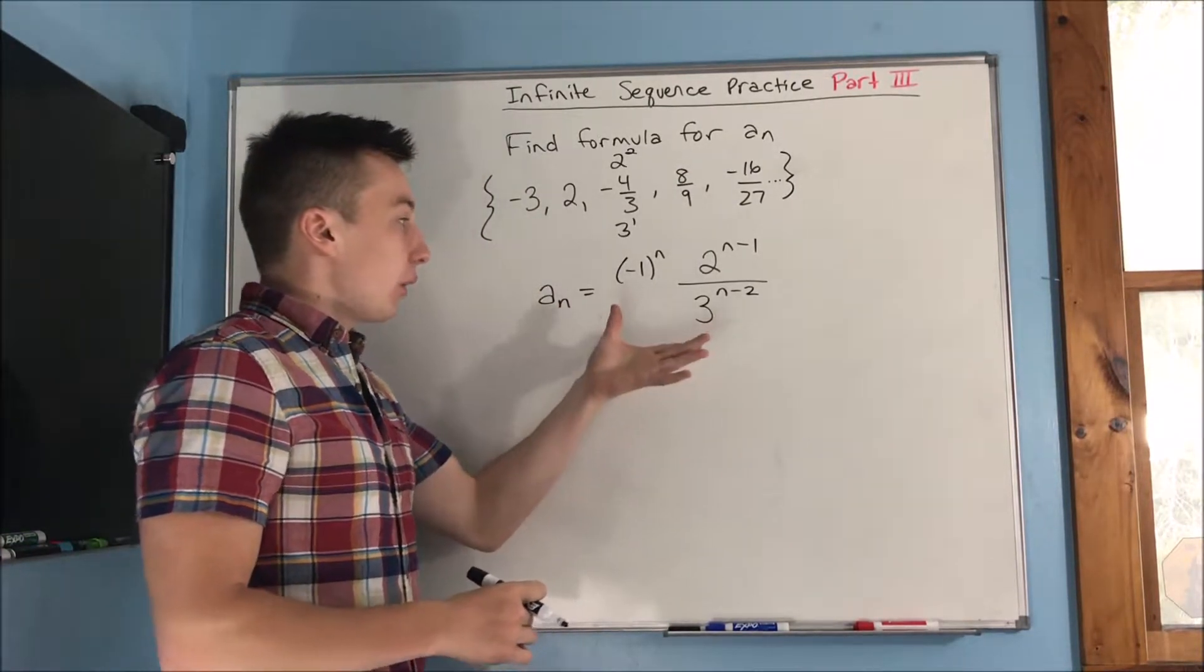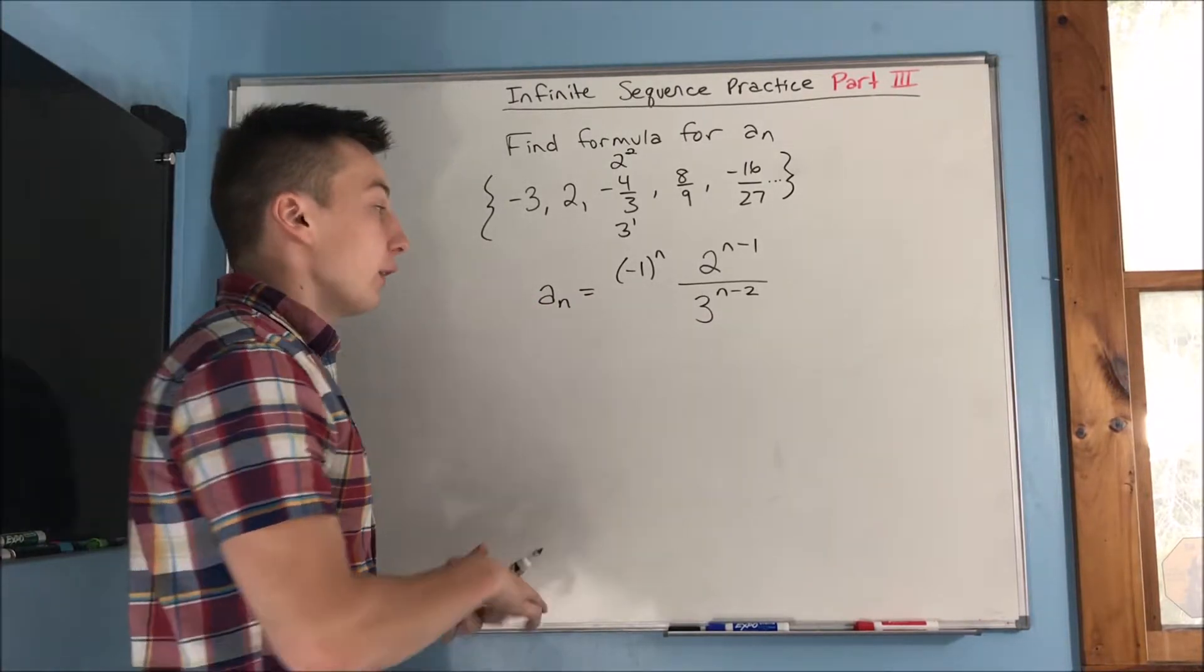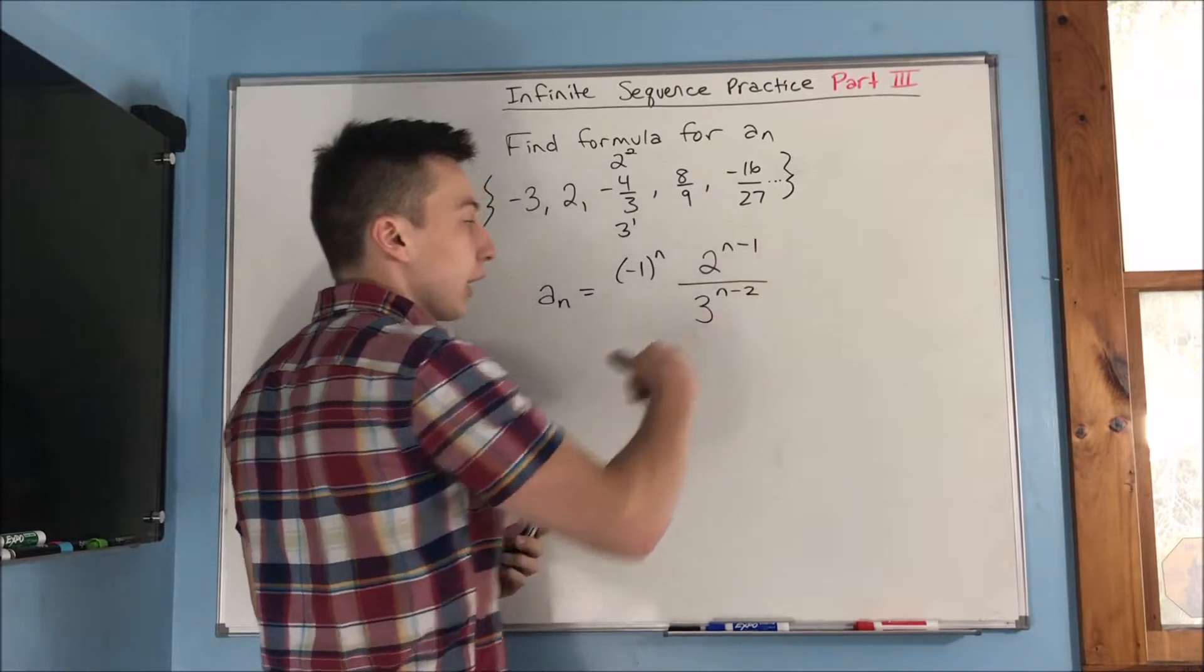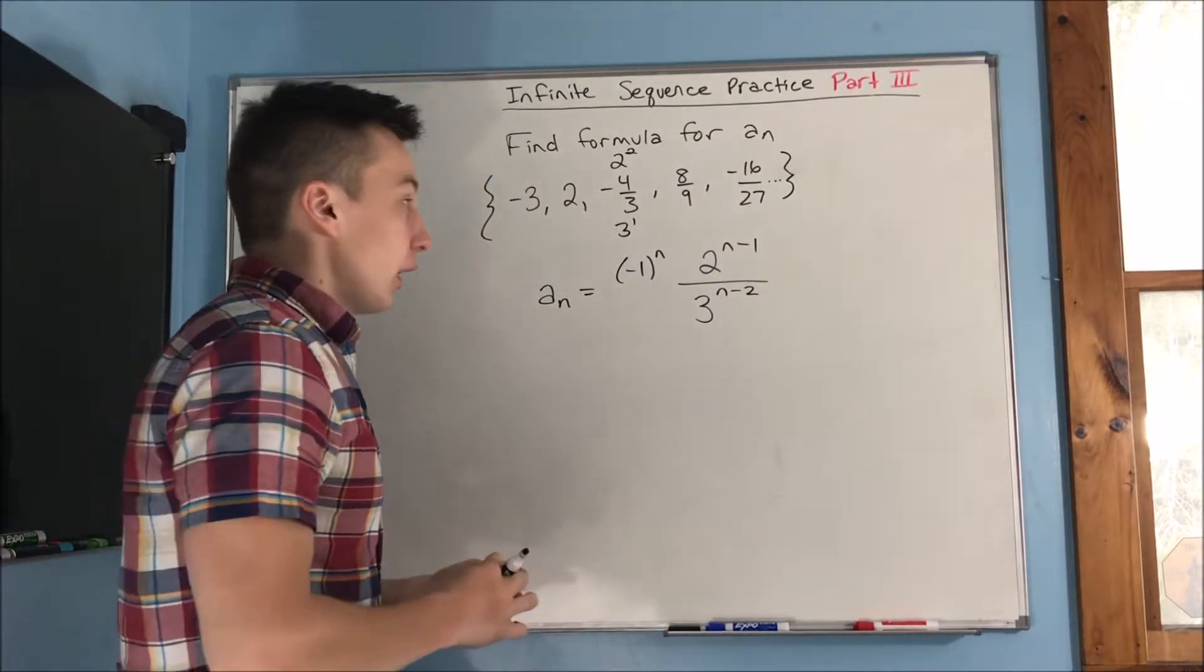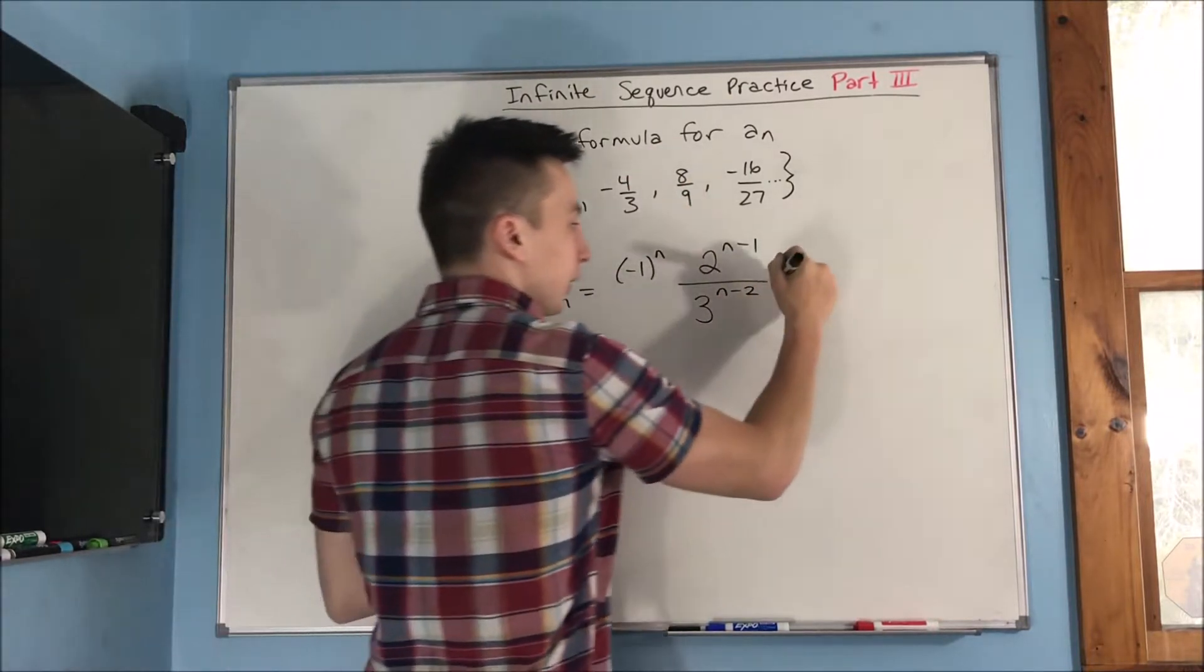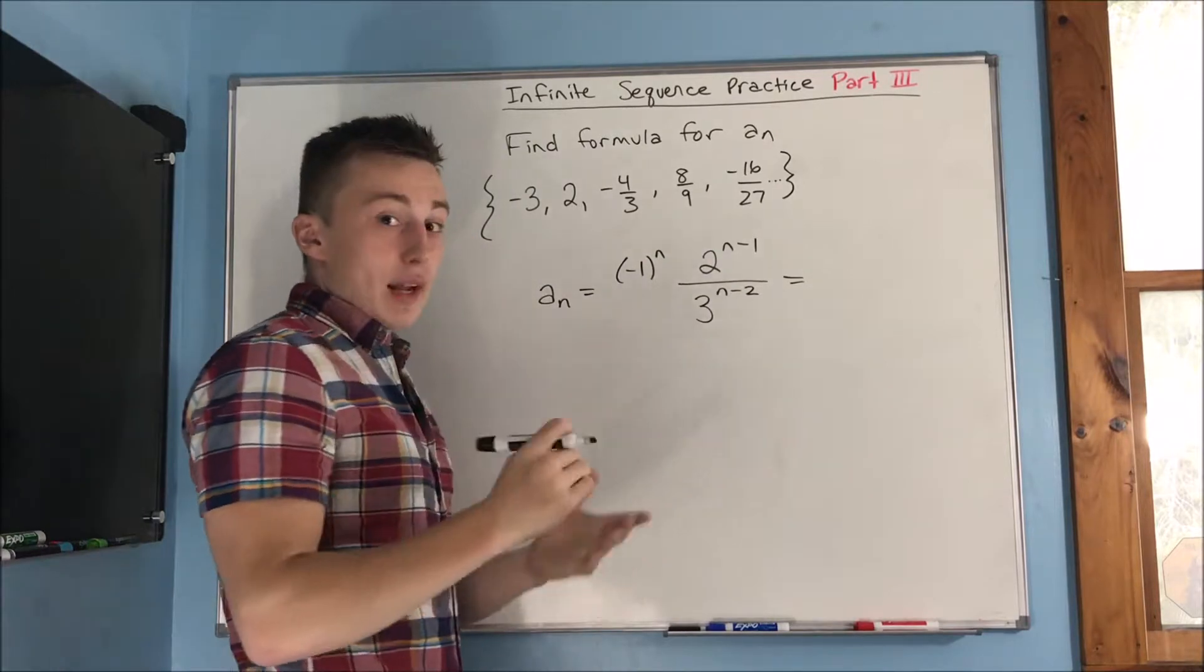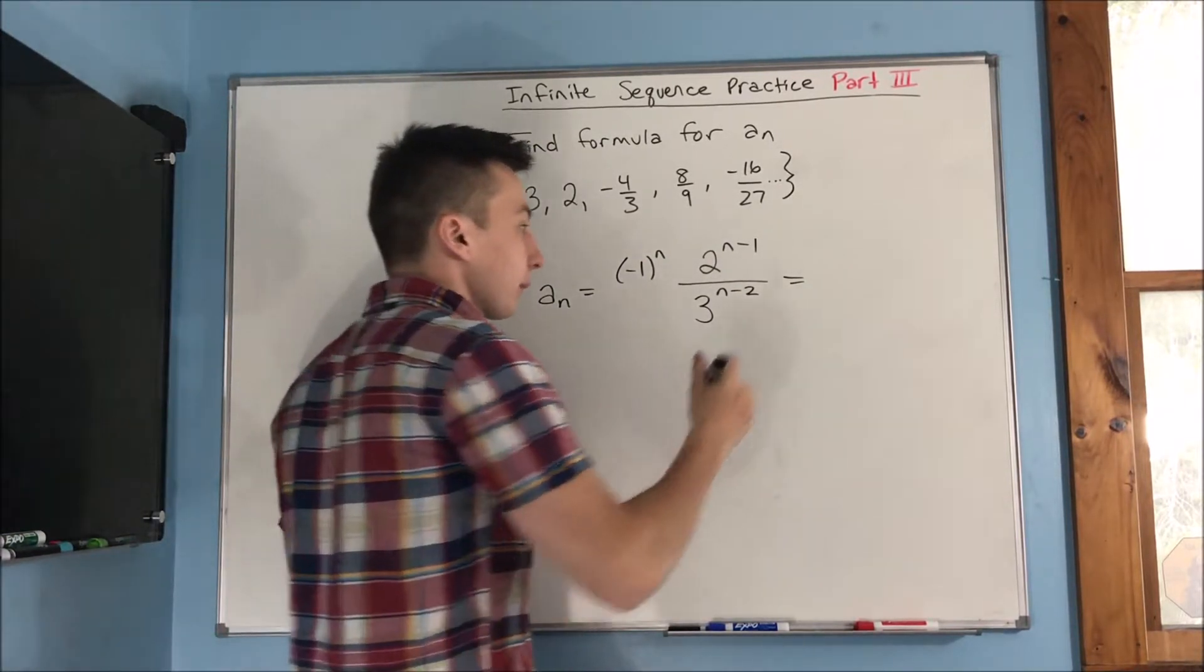So now we have our completed formula, except now we have to just simplify it. You see that we have powers with n's, and then we're going to be able to combine these here and then simplify this down. So if we want to do that, we've got to pull this apart. Let's try to just get everything with an n minus one exponent.